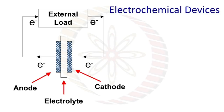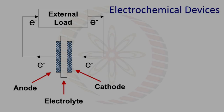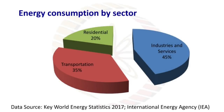Looking at energy consumption by sector: industries and services use the most energy at 45%, transportation uses 35%, and residential use accounts for 20%. So industries use the most energy of any sector.